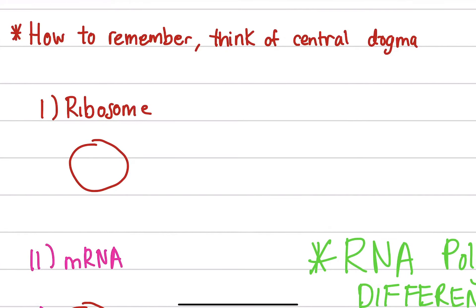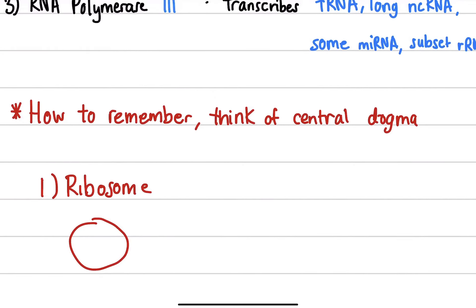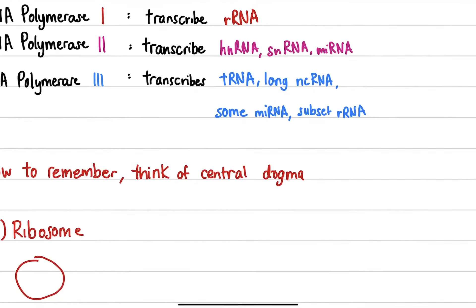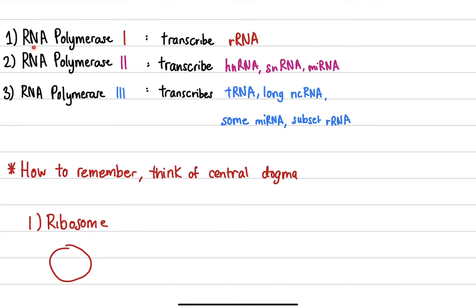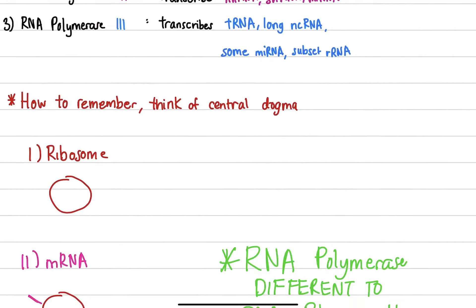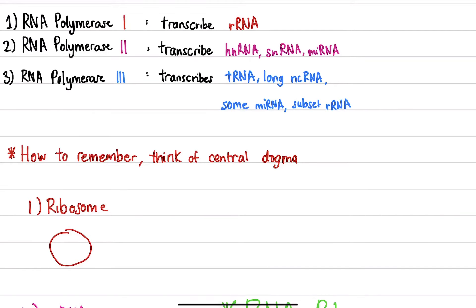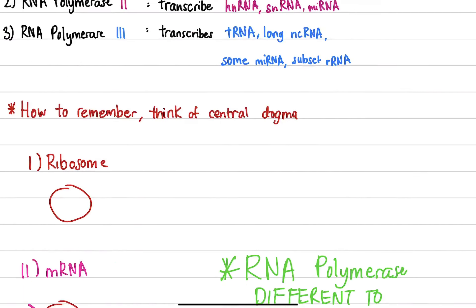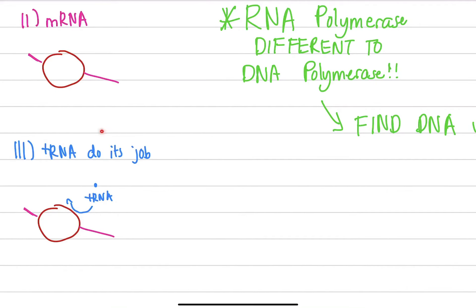Now, this story was a pretty dumb story, I get it, but this is going to help you understand: RNA polymerase 1 will transcribe ribosomal RNA — that's the first thing in the story. RNA polymerase 2 is going to transcribe the mRNA. And then RNA polymerase 3 will be transcribing the tRNA — that's the last step of the story.